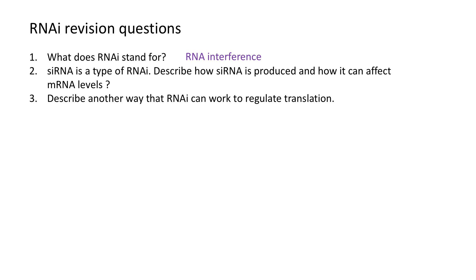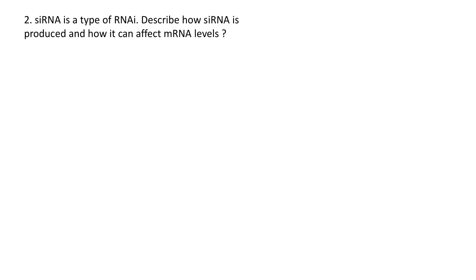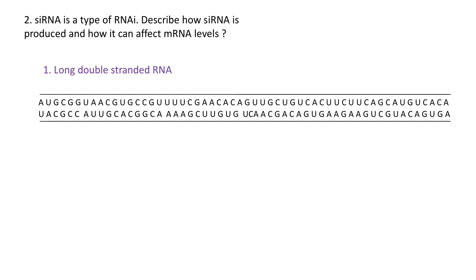siRNA is a type of RNA interference. Describe how siRNA is produced and how it can affect mRNA levels. You can break this down into five steps. First of all, you start with a long double-stranded RNA molecule, and then the next step...